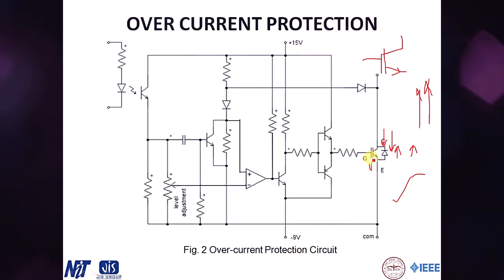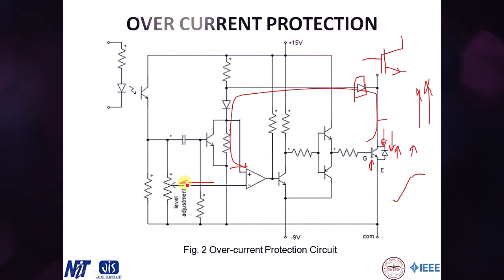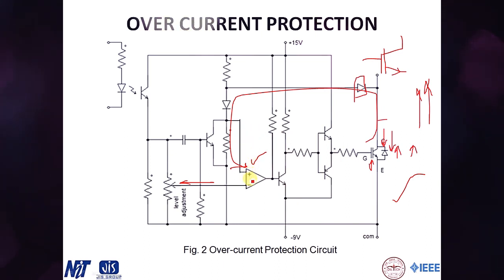We use this rising voltage drop to protect the IGBT. A feedback diode senses the collector-emitter voltage drop and feeds it back to a comparator. The comparator compares this feedback voltage against a reference voltage representing the normal operating voltage drop. During a fault, the feedback voltage increases beyond the reference, so the plus terminal voltage rises and the comparator outputs a high signal.